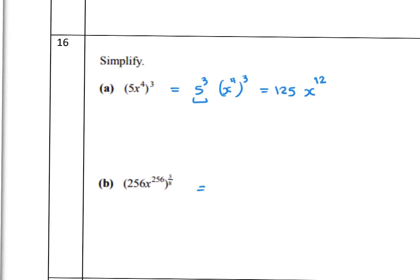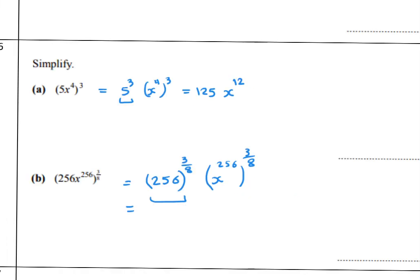Problem 16b: distribute the power over 256^(3/8) times x^256 all to the power 3/8. Using a calculator, 256^(3/8) equals 8. Then multiply 256 times 3/8: 256 × 3 ÷ 8 = 96. So the answer is 8x^96.